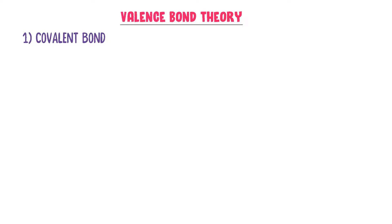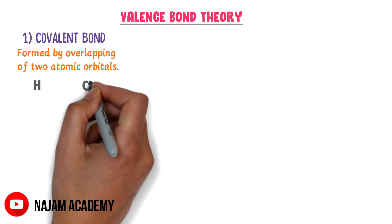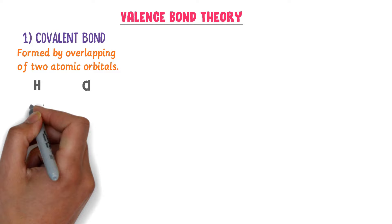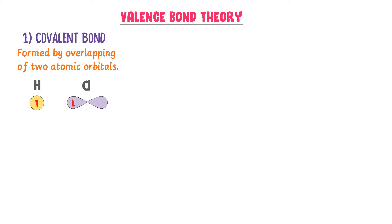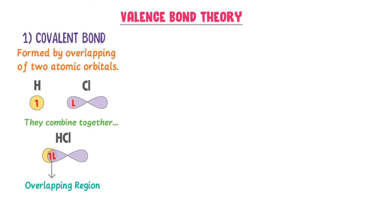What are the postulates or key concepts of valence bond theory? The first point of VBT is the formation of a covalent bond. It states that a covalent bond is formed by the overlapping of atomic orbitals of two atoms. For example, consider a hydrogen atom and a chlorine atom. The valence orbital of hydrogen is the S orbital and that of chlorine is the P orbital. These valence orbitals overlap to share electrons and form the HCl molecule. This overlapping region has the maximum density of electrons. Hence, VBT teaches us that a covalent bond is formed by the overlapping of atomic orbitals.